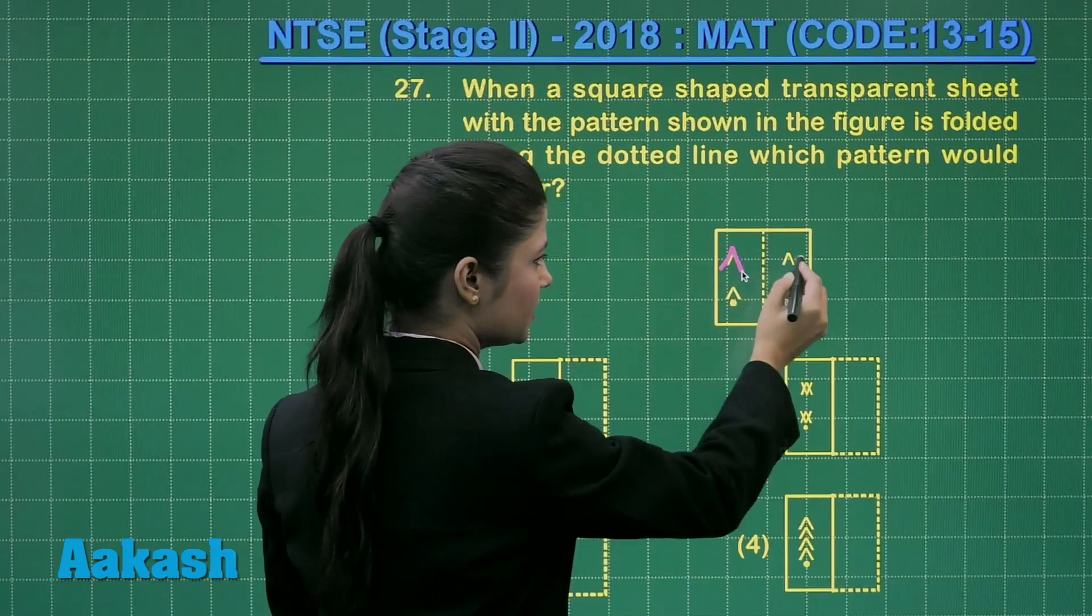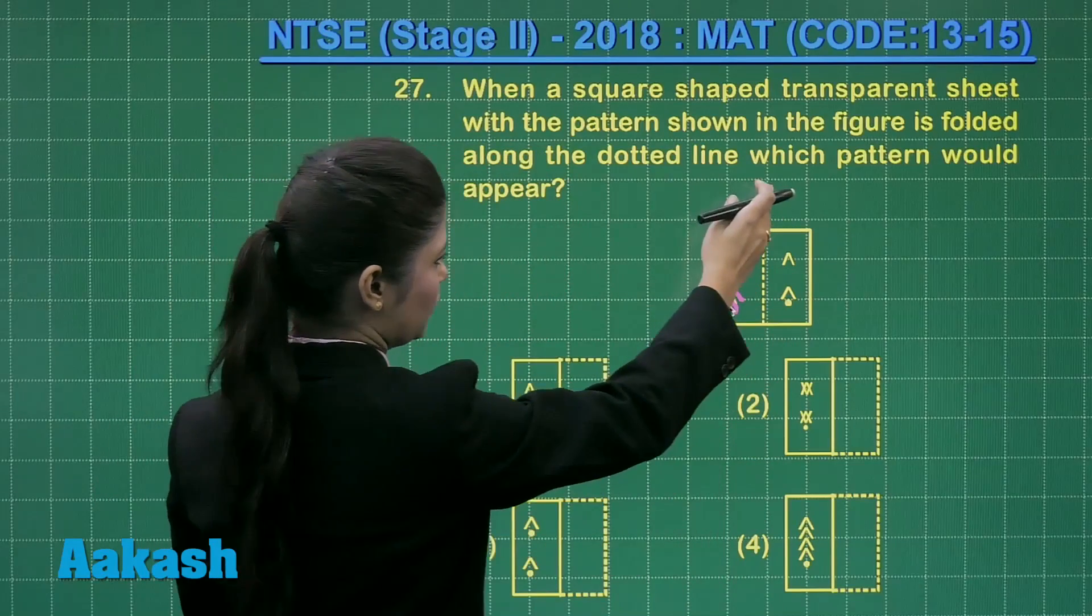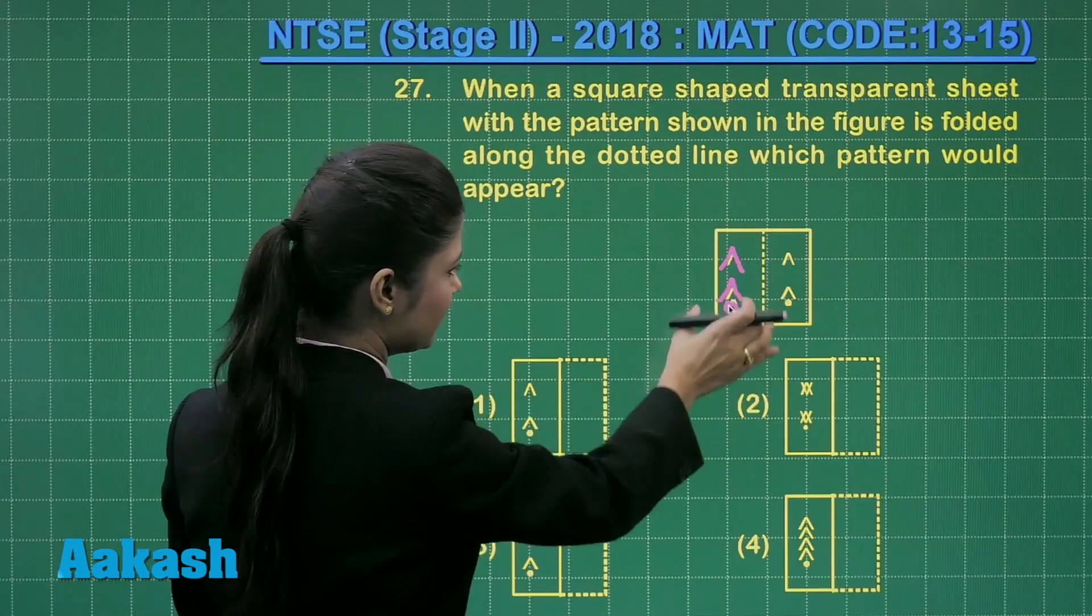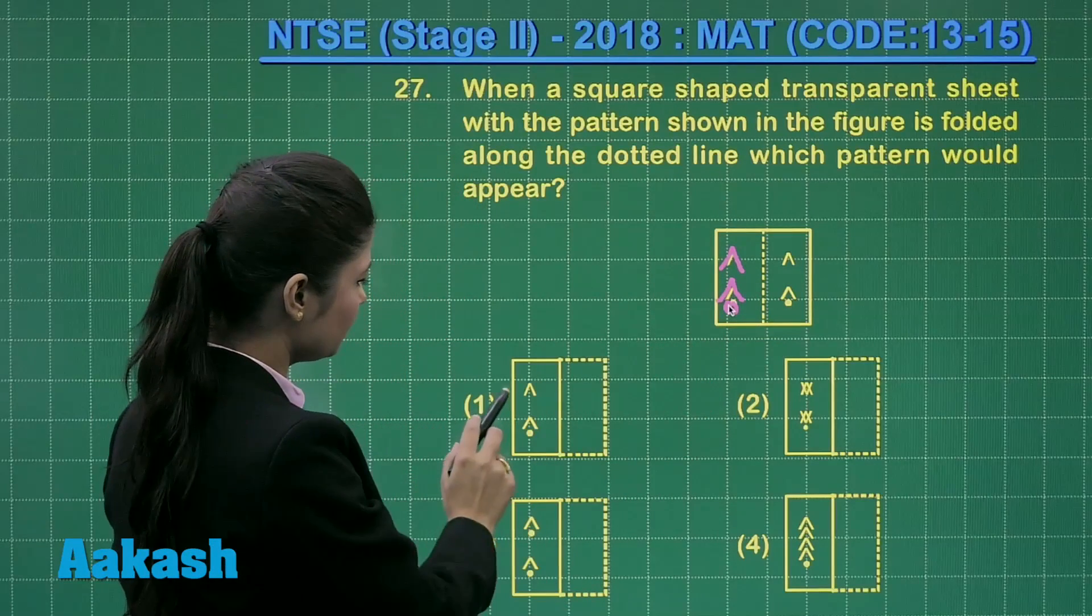That is here this will be superimposed and here this will be completely superimposed. You will be having a look of only this side which will look like this and clearly you can observe.